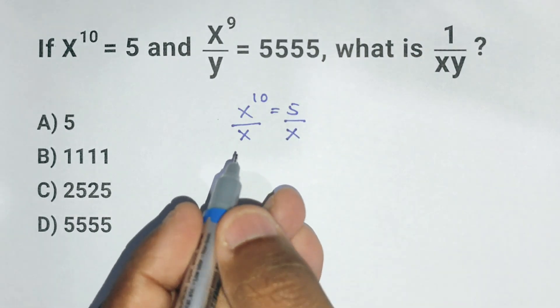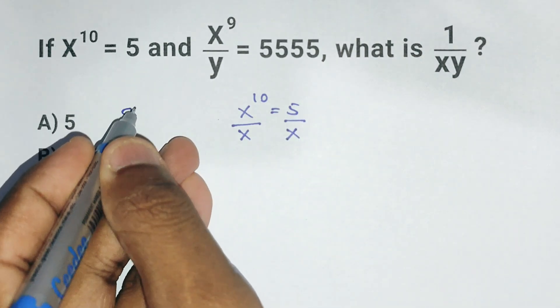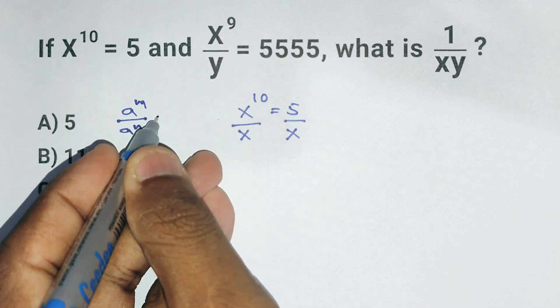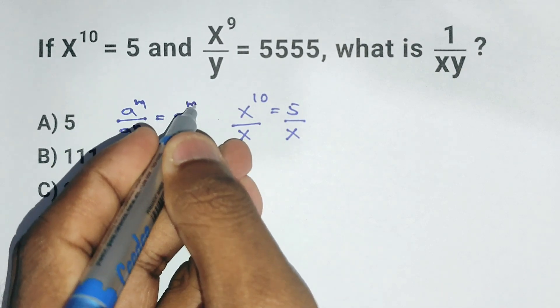Here's a quick reminder: if you divide a to the m by a to the n, you get a to the m minus n.